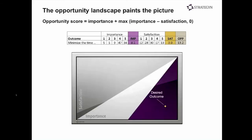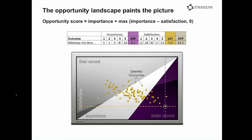We analyze this data by plotting it in what we call the opportunity landscape. Each dot is a desired outcome statement, with importance running to the right and satisfaction vertically. For example, one dot gets plotted because 81% of respondents rated that need a 4 or 5 for importance, yet only 30% rated it a 4 or 5 for satisfaction. We look for outcomes that are important and poorly satisfied — those have a high opportunity score, and anything over 10 gets plotted in the high-opportunity area. This tells us where the market is underserved and where it's over-served. The chances of Bosch randomly addressing 14 unmet needs without knowing what they are? Slim to none.